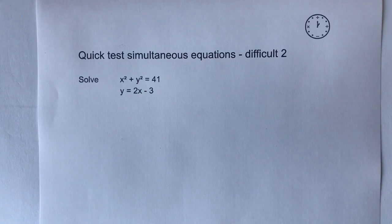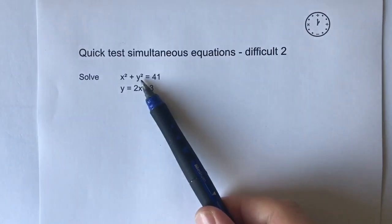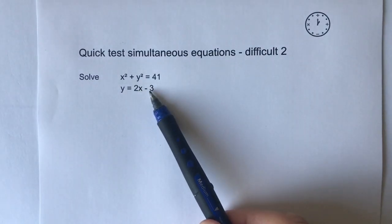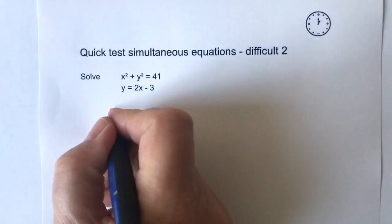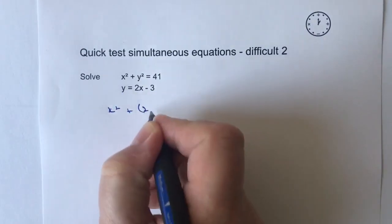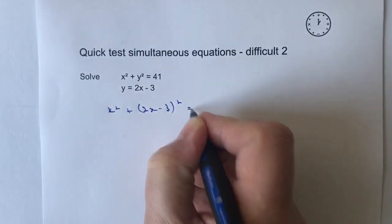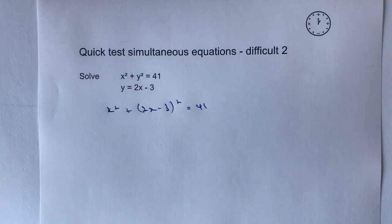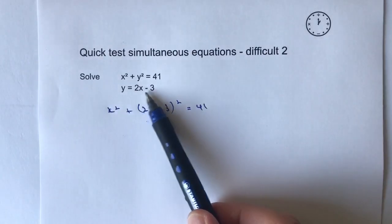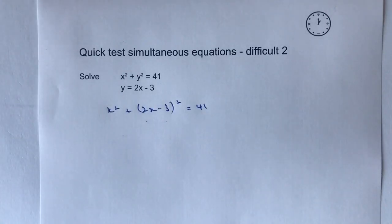Okay, so the first thing is that rather than writing y, I'm going to use this value of y which is 2x minus 3. So I can write my equation as x squared plus (2x minus 3) squared equals 41. And that means then that I've got x as the unknown and I can solve for x. And then once I've got my value of x, I can plug that in to get my value of y into this particular equation here. Okay, so this particular method is the method of substitution.